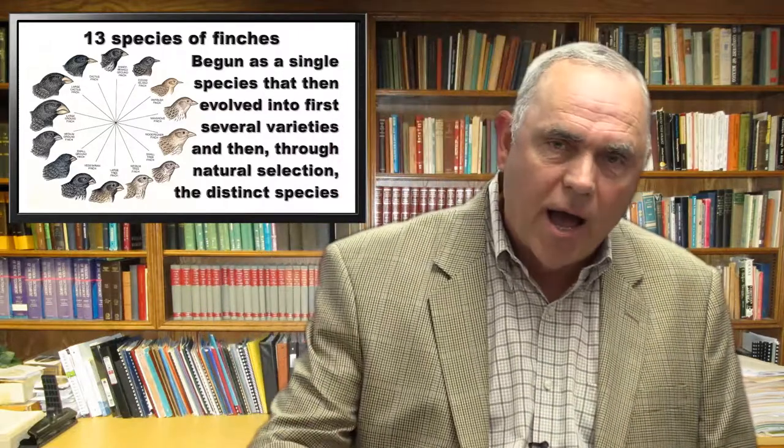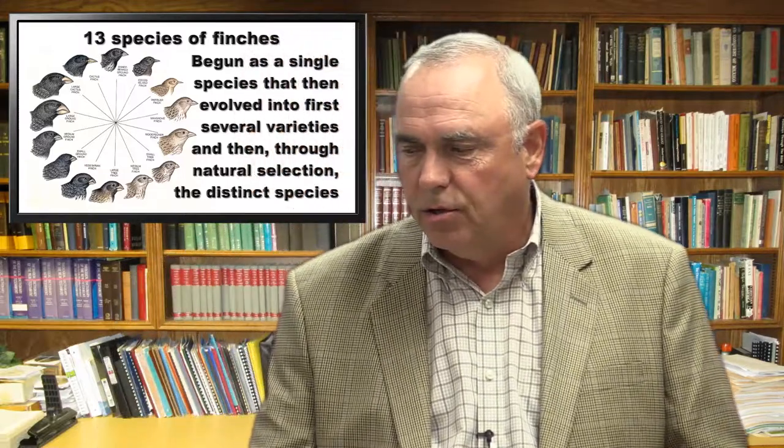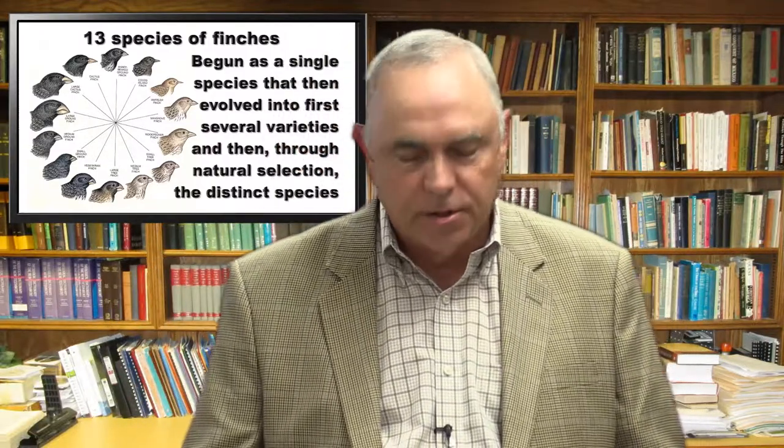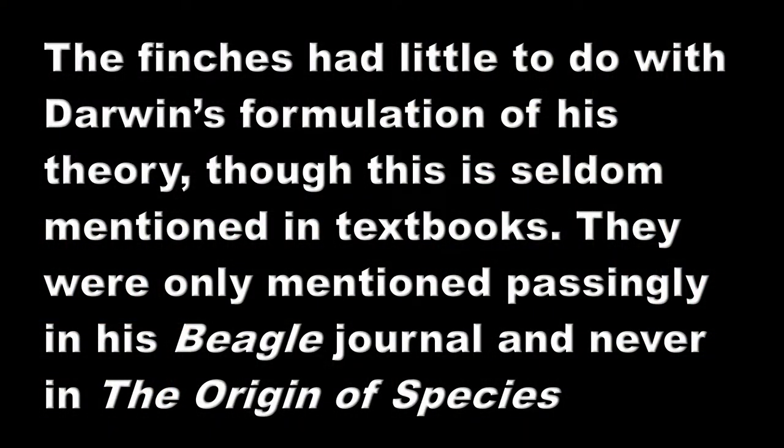This is used as proof of evolution, and evolutionists would say these are different transitional forms. But what most people don't know is that's really not how Darwin came up with his theory. He observed the finches — that's true — but they had little to do with his formulation of his theory. They were only mentioned passingly in his Beagle journal, and they're not mentioned at all in On the Origin of Species. Yet they're still heralded as Darwin's mechanism for how evolution began.